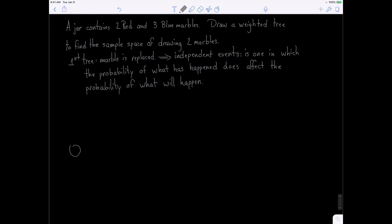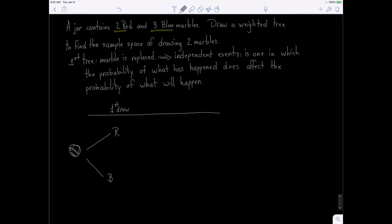So here we go. We keep track of it the same way we did earlier. On our first draw, you could either draw a red marble or you could draw a blue marble. The probability of a red — there are two reds and three blues, so two plus three is five — the probability of red is two-fifths, and the probability of blue is three-fifths.